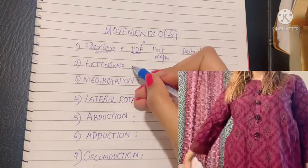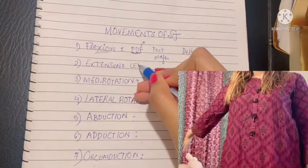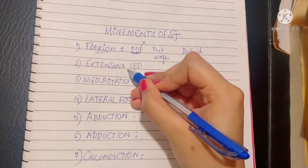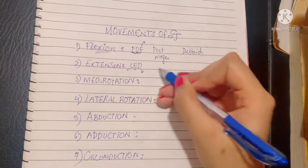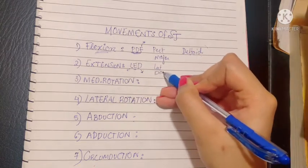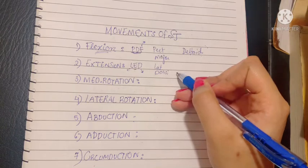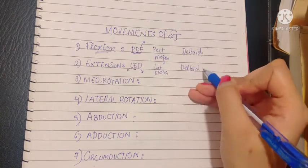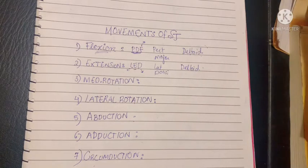Let's talk about extension. The mnemonic for extension is LED: E for extension, and two muscles are involved—the latissimus dorsi and deltoid. The latissimus dorsi carries out extension at the shoulder joint with help of the posterior fibers of the deltoid muscle. Other accessory muscles helping in this movement include the teres major.